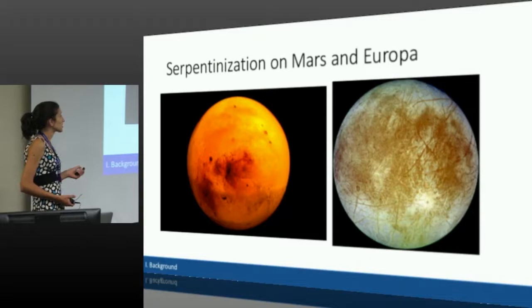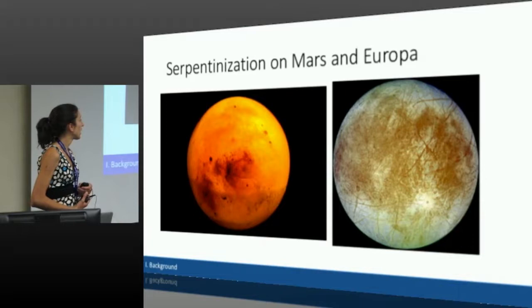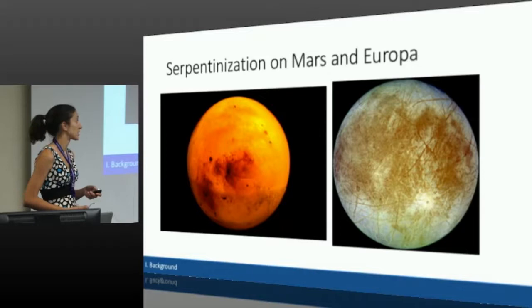Additionally, Europa might also contain some of these mantle rocks — iron-bearing rocks that could be serpentinizing. And studies have been done on Enceladus showing there might be high pH fluids there that indicate serpentinization is occurring.